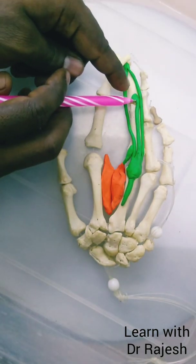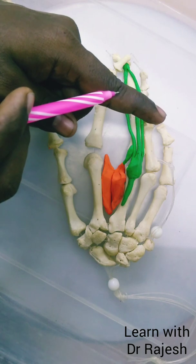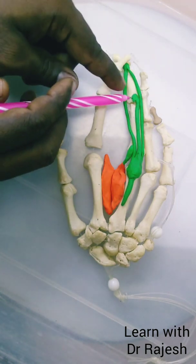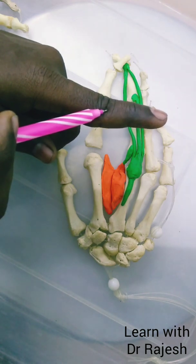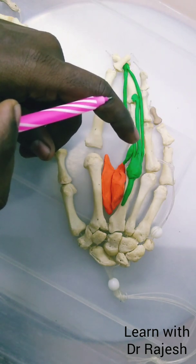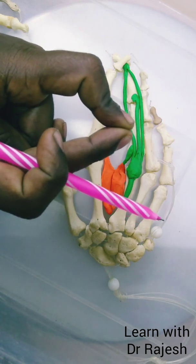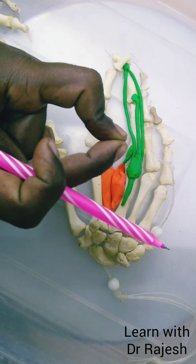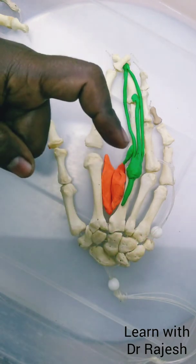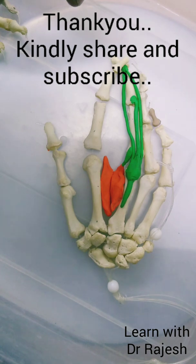There is one more condition where there is injury to the middle slip, which gets attached to the base of the middle phalanx and acts on the middle interphalangeal joint. When this is injured, extension at the middle interphalangeal joint is impaired, resulting in a flexion deformity at the middle interphalangeal joint along with a hyperextension at the distal interphalangeal joint. This kind of deformity is called boutonnière deformity. This is about the anatomy and applied importance of the extensor hood or the dorsal digital expansion.